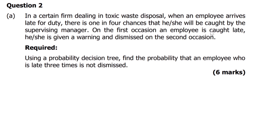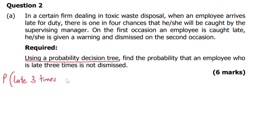So we have a scenario here. When someone comes late two times in a row and they are caught, then they will be dismissed. They're asking us to use a probability decision tree to find the probability that an employee who is late three times is not dismissed.